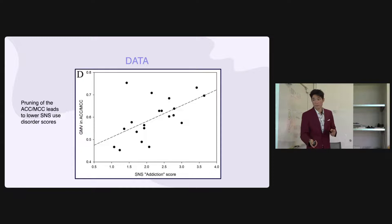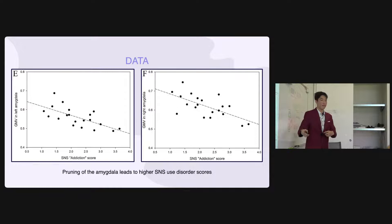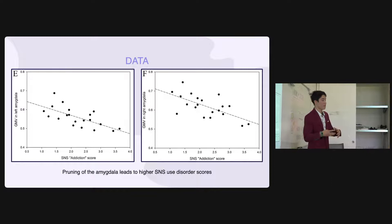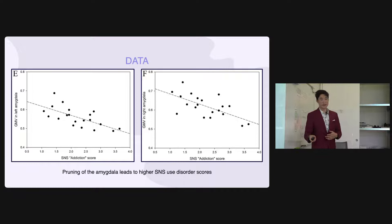Moving on to the amygdala — there is actually a negative association between amygdala GMV and the SNS use disorder score, looking at both the left and right amygdala. The amygdala is the reward center and dopamine release region of the brain. When there is less GMV in the amygdala, your social networking site score goes up, showing that you actually build a dependency on these apps for dopamine release, although it is not as high as dopamine produced from alcohol and other addictive substances. For the nucleus accumbens, there was no graph, as the results were largely insignificant and could be attributed to other factors.